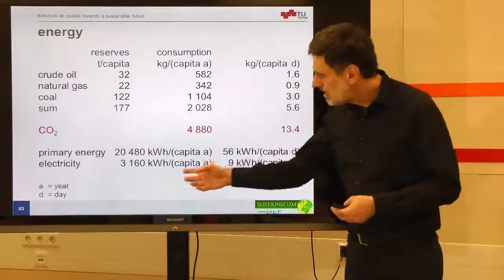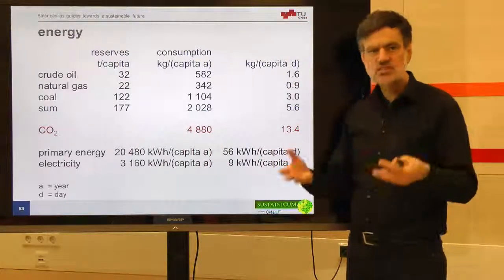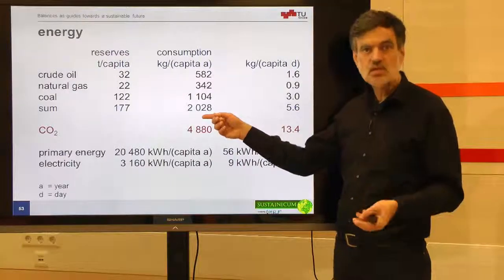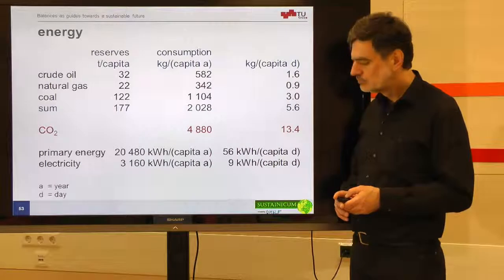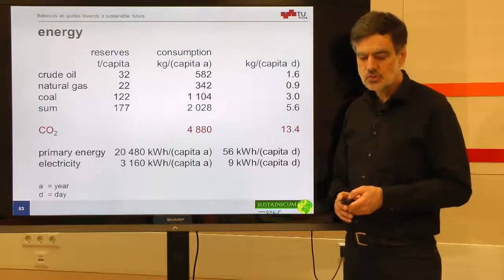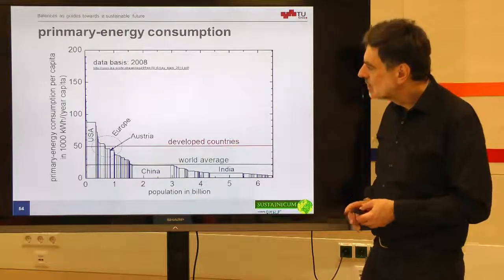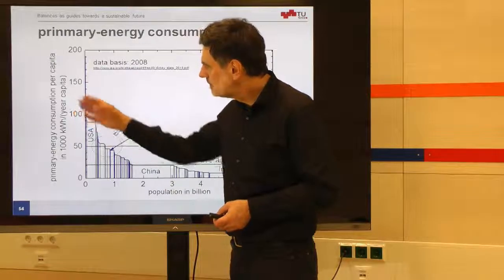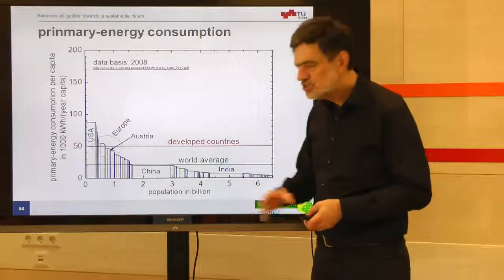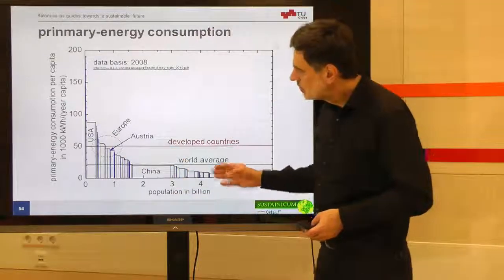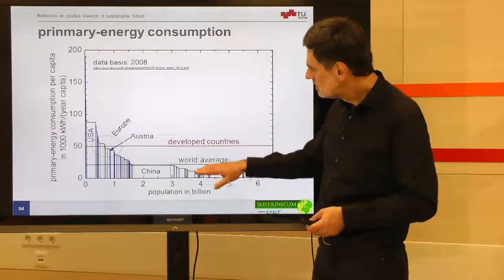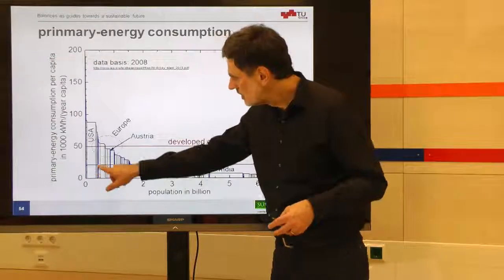The utilization of these resources is not equally distributed across the world. Here we see the primary energy consumption per capita in 1,000 kilowatt hours per year plotted versus the population in billions. All nations for which data are available have been sorted according to their per capita consumption of primary energy. The world average is a little bit more than 20,000 kilowatt hours per year.